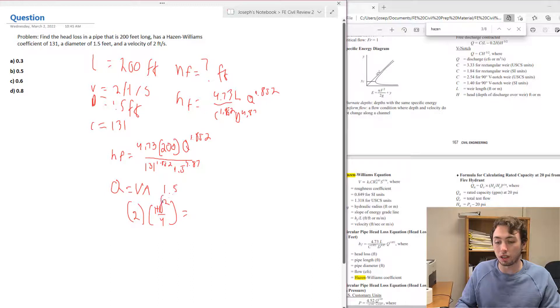...we end up getting a Q of roughly 7.1 feet cubed per second. So now we have everything we need. We're going to plug this into the final equation.